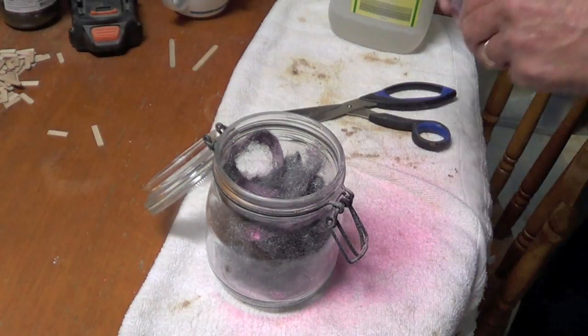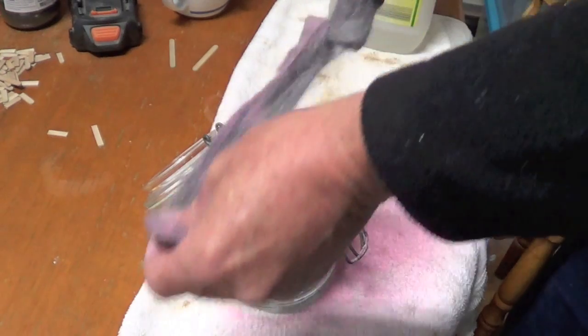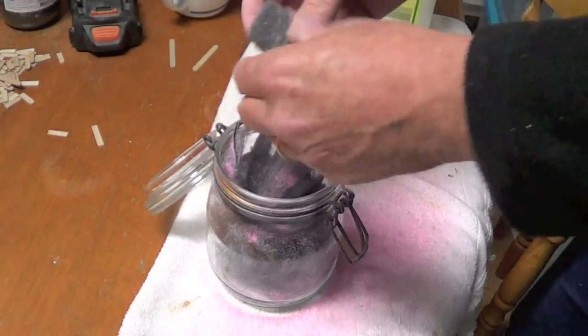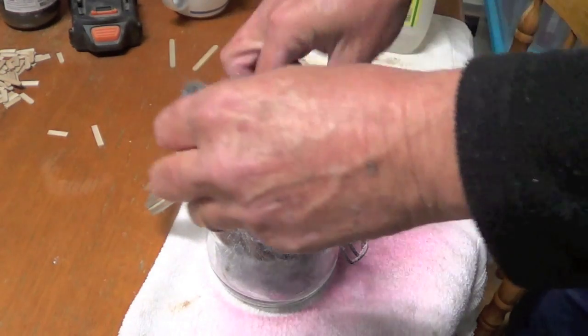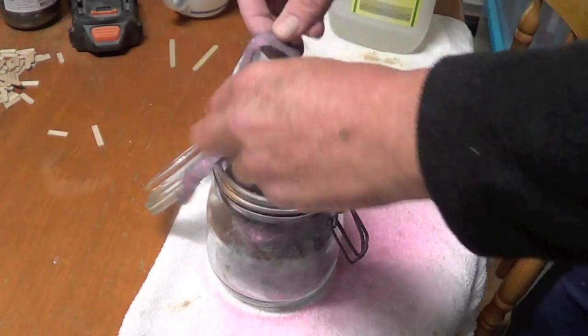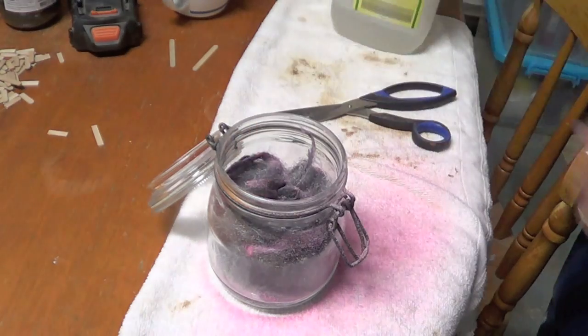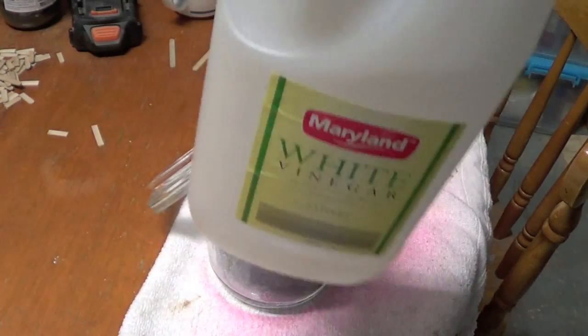So I'm going to put three of these steel wool pieces in this jar. And then I'm going to put in the vinegar.